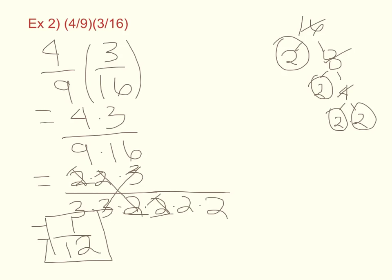We're going to do one more problem. Here we have 5 times the quantity of 8 over 20, so we have a whole number times a fraction. Whenever you have a whole number you can always put that over 1 to make it a fraction. 5 is the same thing as 5 over 1, and 8 over 20 is 8 over 20. Again we're going to multiply our numerators, 5 times 8, and multiply our denominators, 1 times 20.